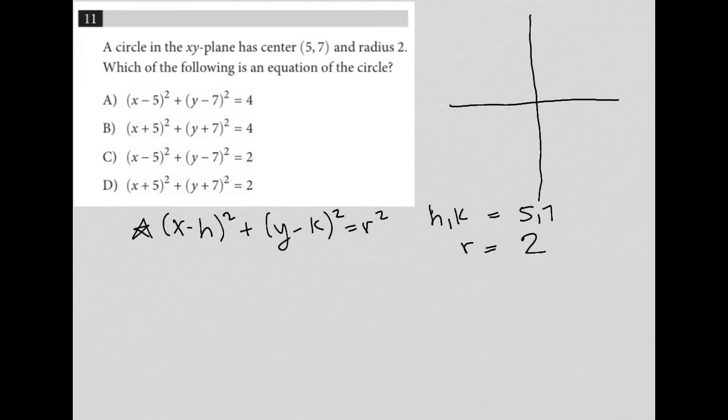And now because we know the center is 5, 7 and therefore the 5 is the h value, right? So I could have this as x - 5 replacing that h. And we know that k is 7, so I can replace k with 7. And we know that r is 2, so I can replace r with 2, meaning that I'd have (x - 5)² + (y - 7)² = 2², which is just 4.